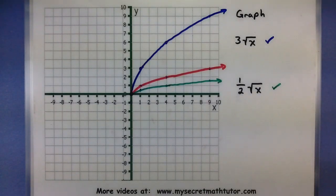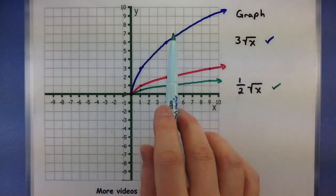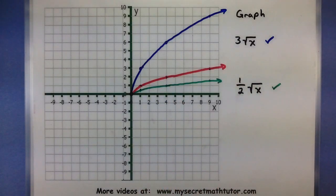So when multiplying on the outside by a number larger than 1, we stretched it vertically, multiply on the outside by a number between 0 and 1, and we shrunk it vertically.